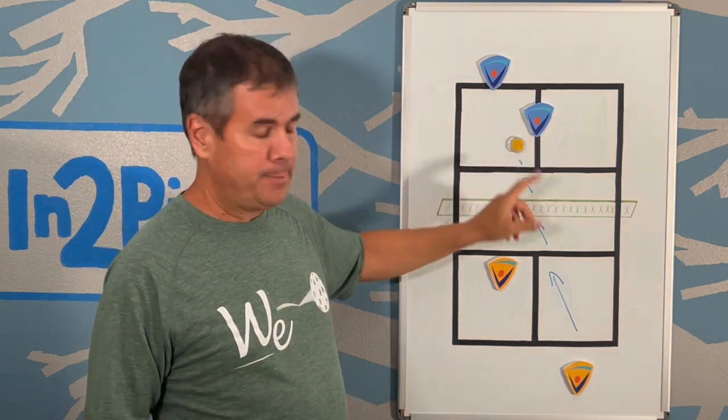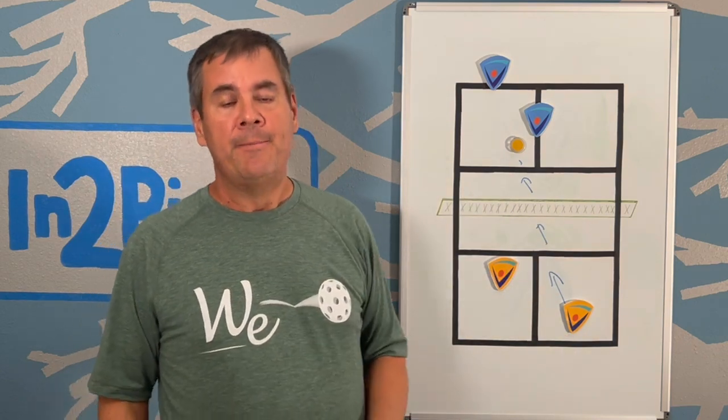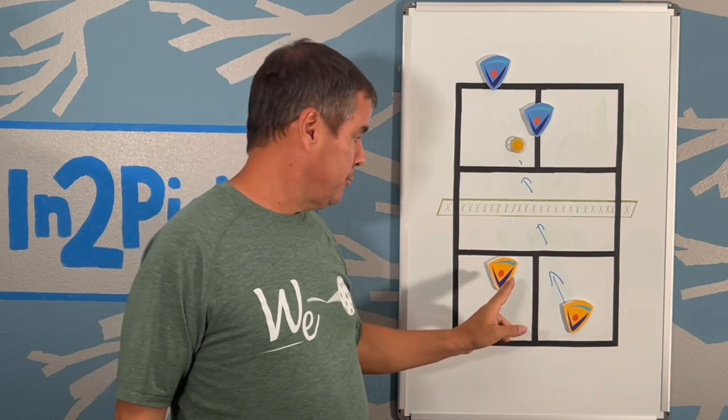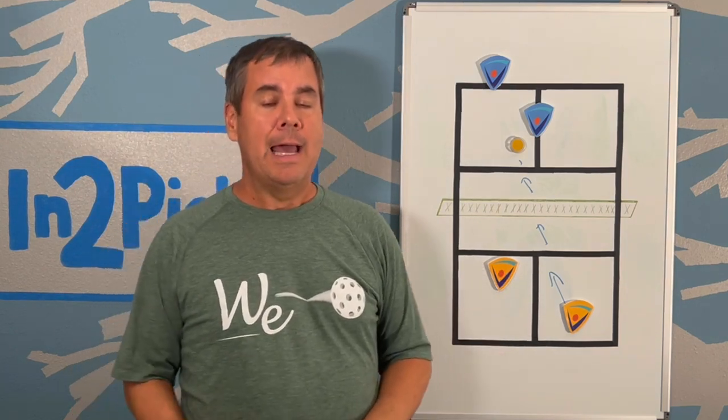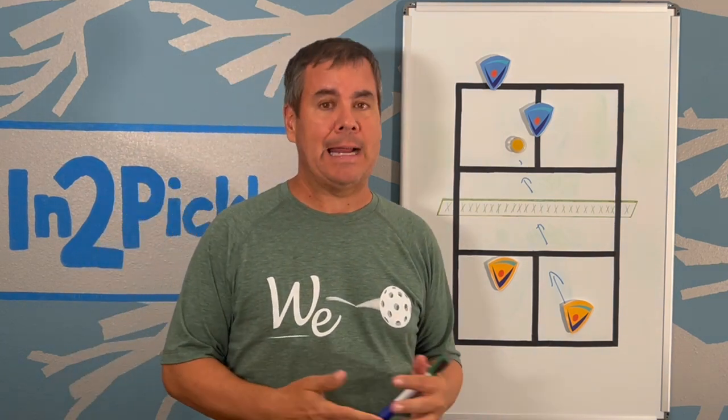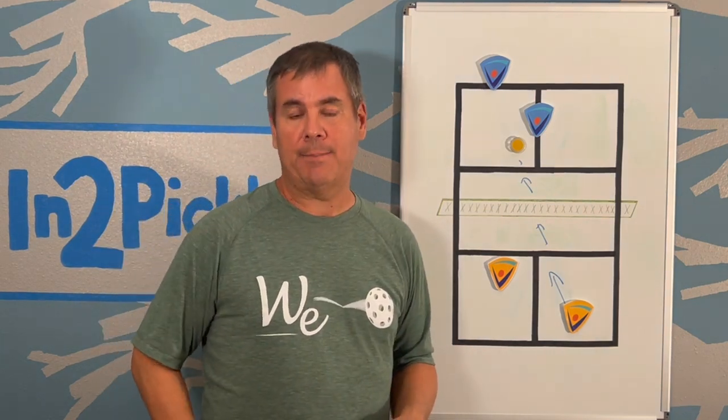At the time that this shot's being hit, this player is likely in motion through this zone here. So the question that is asked is should this shot be hit to this player at the no volley zone line and more specifically should it be hit at the player's forehand which is a common attack technique. It's a good attack technique normally when you're attacking somebody.